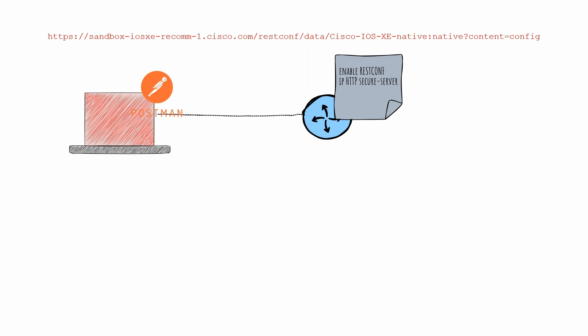RESTCONF and the HTTP server need to be enabled on the device. Connect the device using SSH, enter the RESTCONF command to enable RESTCONF, then enter the 'ip http secure-server' command to enable and start the secure server. In Postman, we need to add the URL with the HTTP method request to indicate how to find specific resources in the API.